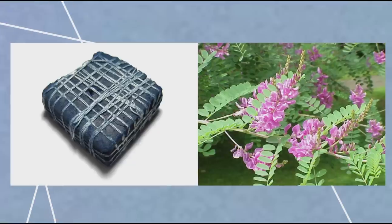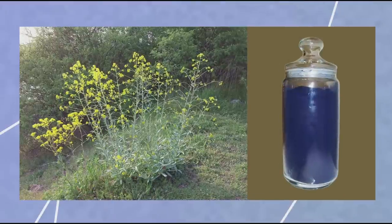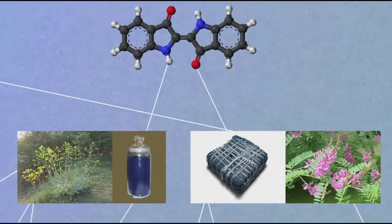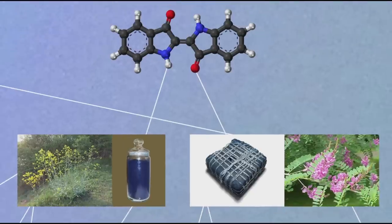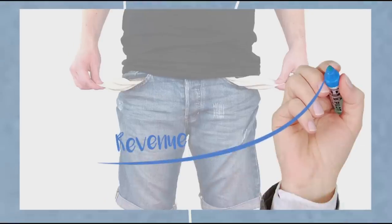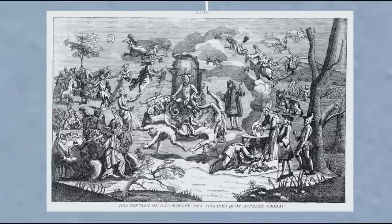Indigo had been available to the ancient Greeks and Romans, but it was very rare in medieval Europe, so they had to settle for woad dye instead, until Portuguese explorer Vasco da Gama discovered a sea route to India in the 15th century. Indigo dye actually contains the same chemical as woad but in a much higher concentration, which got all the woad producers upset because indigo threatened their profits. So they started a smear campaign, claiming that indigo was poisonous (it isn't), rotted yarn (it doesn't), and was the devil's dye — but in the end there was no holding back the new indigo, since people really liked their bluer-than-blue blues.